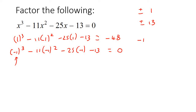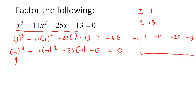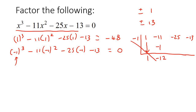Put the negative 1 over here, and then all of these numbers: 1, negative 11, negative 25. Then you bring this 1 down and multiply — that's going to give you negative 1, and then you add these together, that's going to give us negative 12. Then you multiply these two together, which is positive 12. You add these together, which is negative 13. Then you multiply these together, which is positive 13. And then you add these numbers together, which is 0.